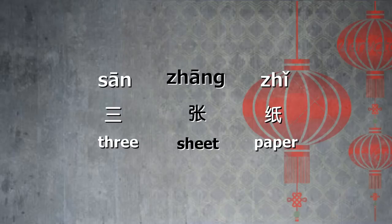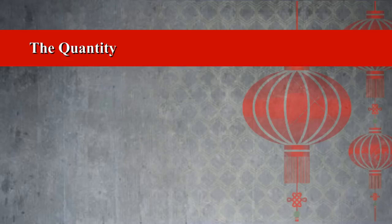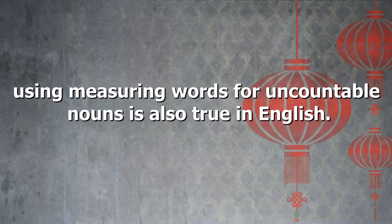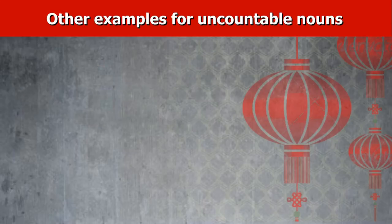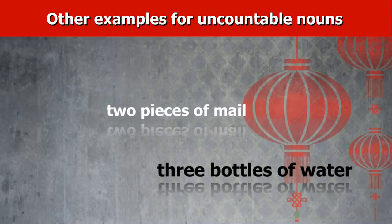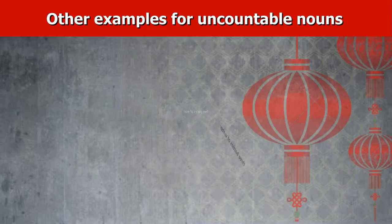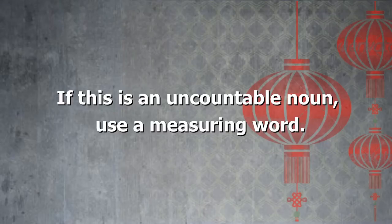Zhi means paper. As you can see, three is the quantity, zhang is the measuring word, and paper is the noun. The same is typically true in English for uncountable nouns — just like 'two pieces of mail' or 'three bottles of water.' So in Chinese and English, you need to use measuring words for uncountable nouns.